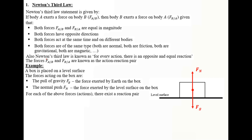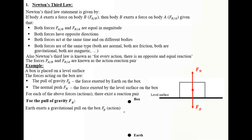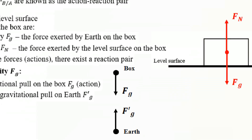For each of the above forces considered as actions, there exists a reaction pair. The pull of gravity is due to the interaction between the Earth and the box. Earth exerts a gravitational pull on the box, F_g, as the action. Then the box exerts a gravitational pull on Earth, F'_g, as the reaction. Both forces have the same magnitude, are opposite in direction, act at the same time on different bodies, and are of the same type.